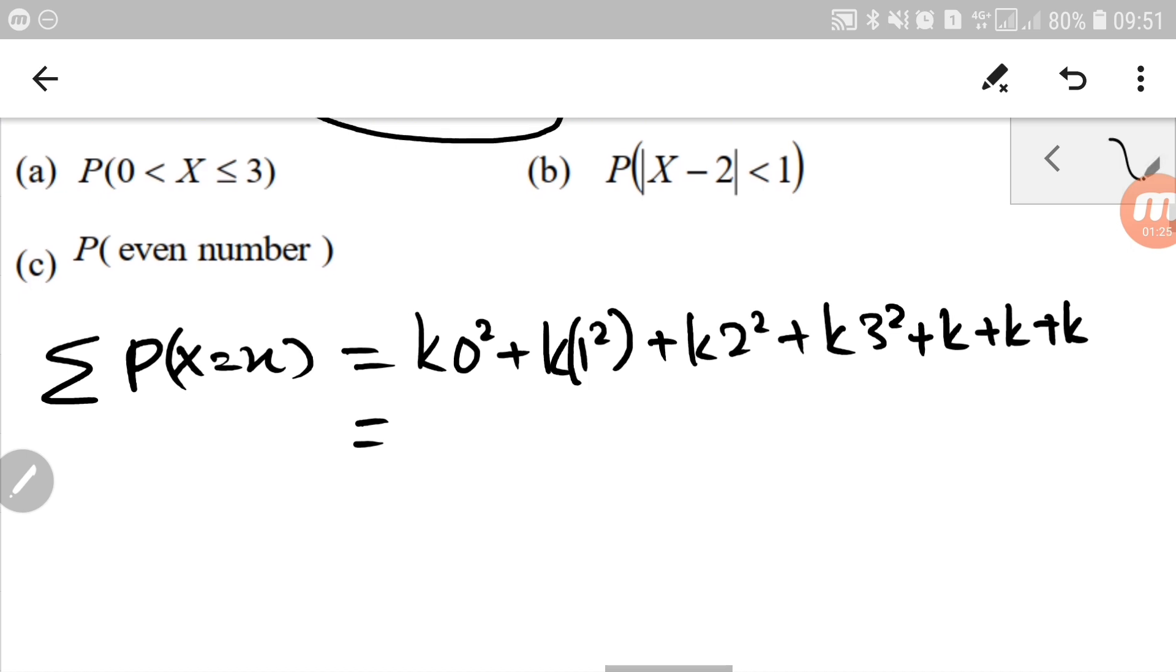So let's calculate all of them. This is 0 plus k. This is 4k and that is 9k.